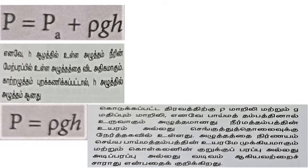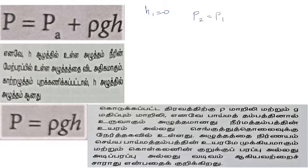Now the answer is: P2 minus P1 is equal to A. You can see the model is P1 plus rho g into h2 minus h1.